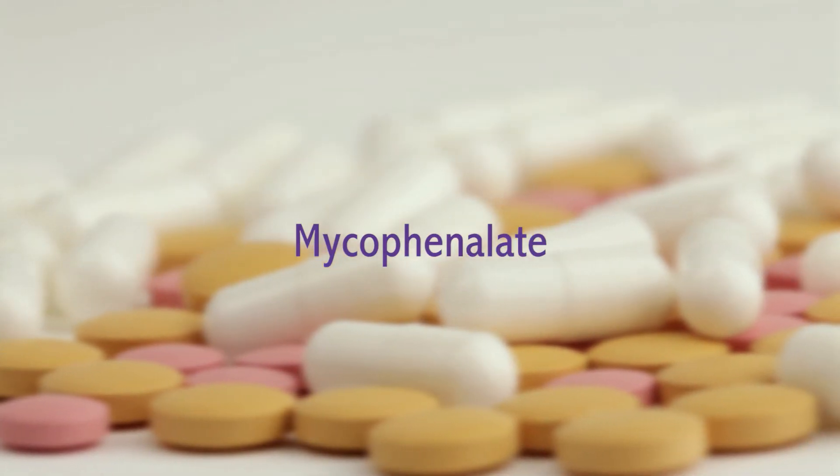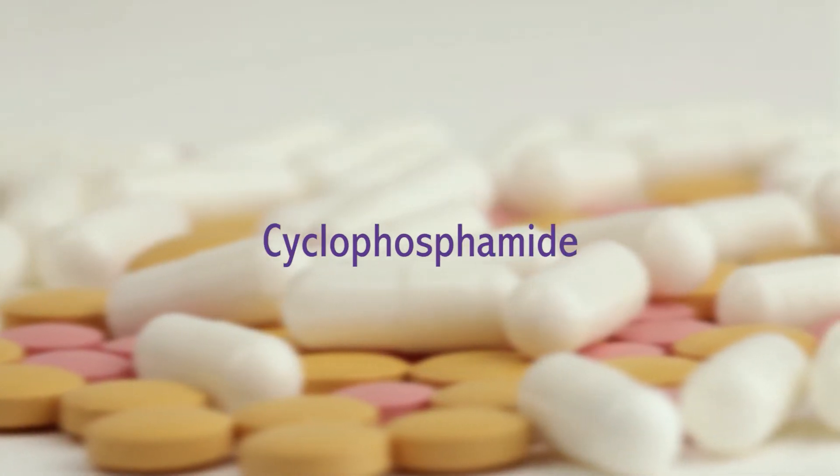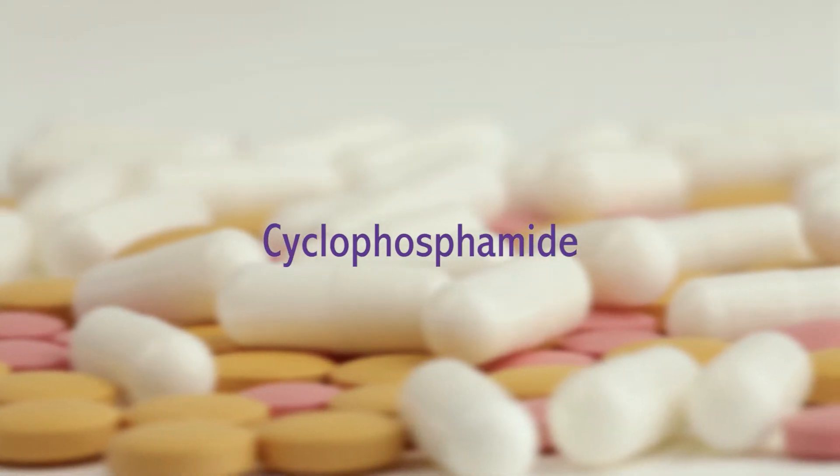In terms of other treatments, a number of treatments have been tried that are used for a range of different inflammatory diseases of the kidney — drugs such as mycophenolate, cyclosporine, tacrolimus, cyclophosphamide, and azathioprine. A number of these drugs are used to treat conditions such as lupus nephritis or vasculitis. However, in IgA nephropathy none of these have been shown to consistently provide any benefit or protection of the kidney and prevent further kidney damage.